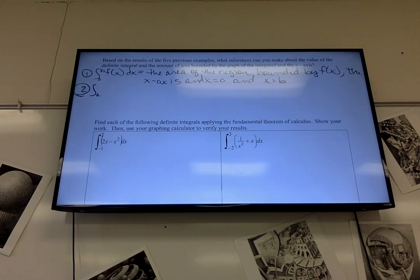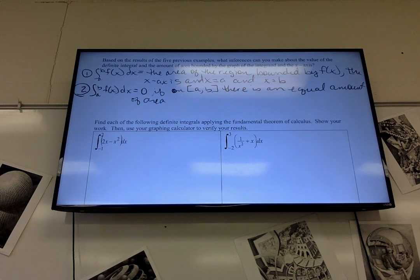Okay, so if we do a to b of f of x dx, and we get zero, that happens if, that's supposed to be, you know, on a to b, there is an equal amount, equal, and I was like, what's an equal? Oh, of area above and below the x-axis.